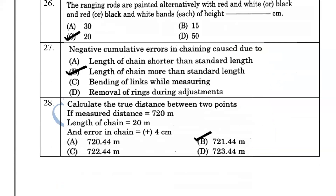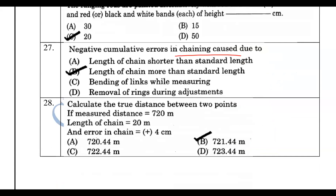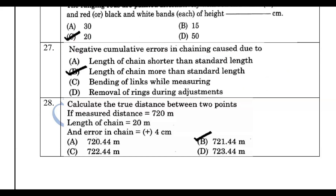The negative cumulative error in chaining is caused when the length of the chain is shorter than the standard length. If the chain length is less than standard, a negative error results.